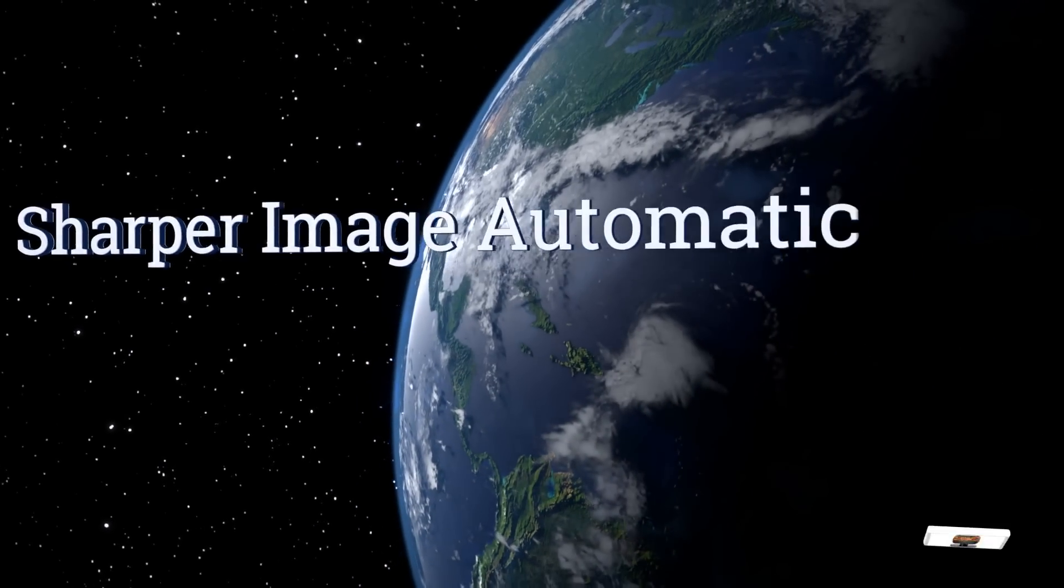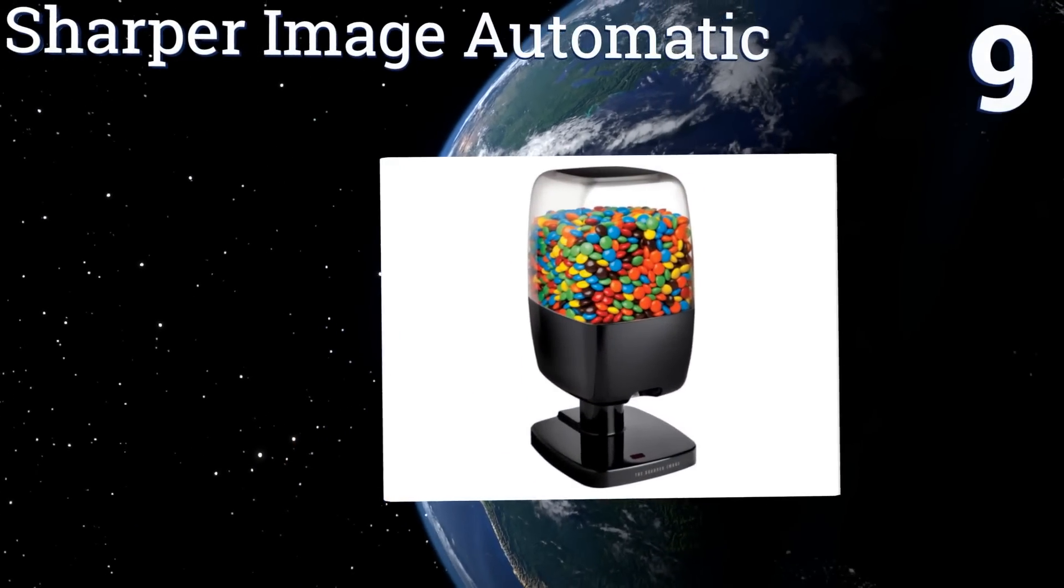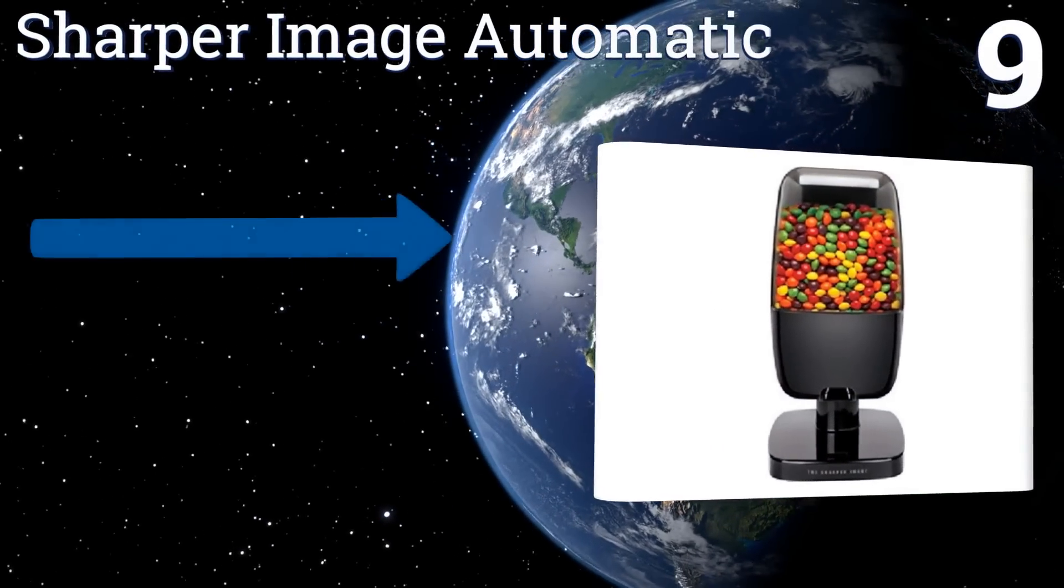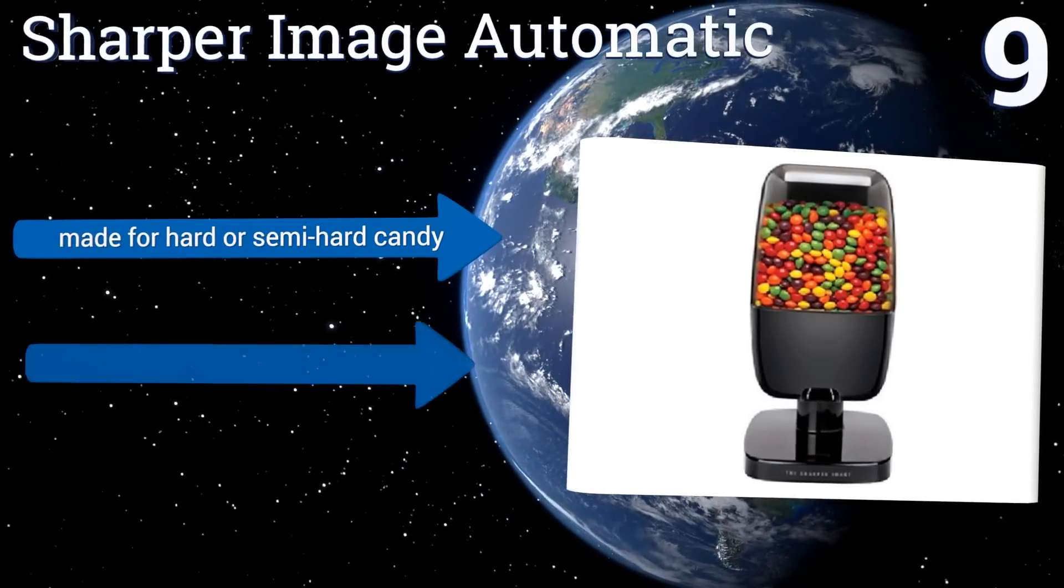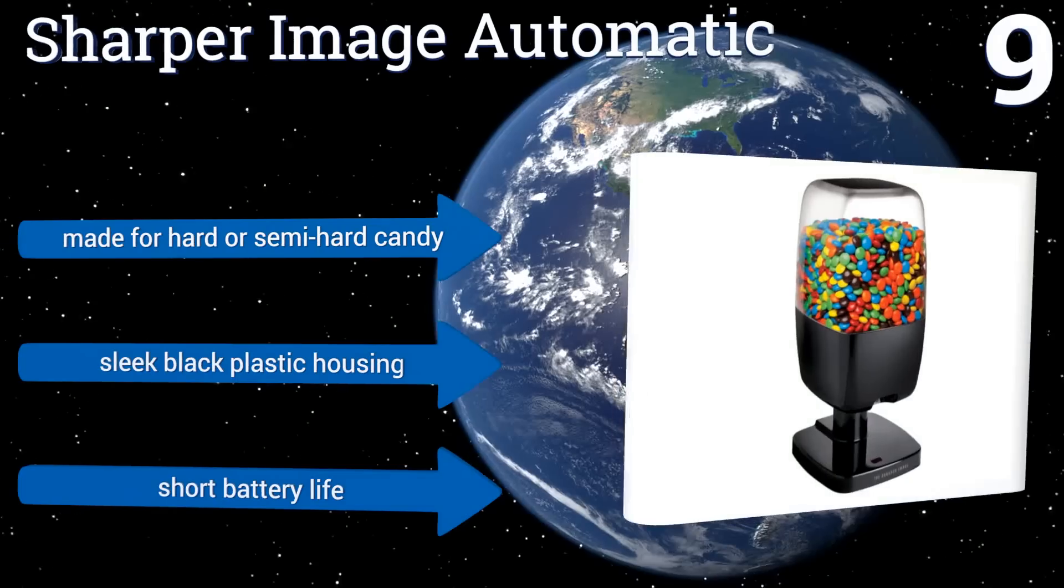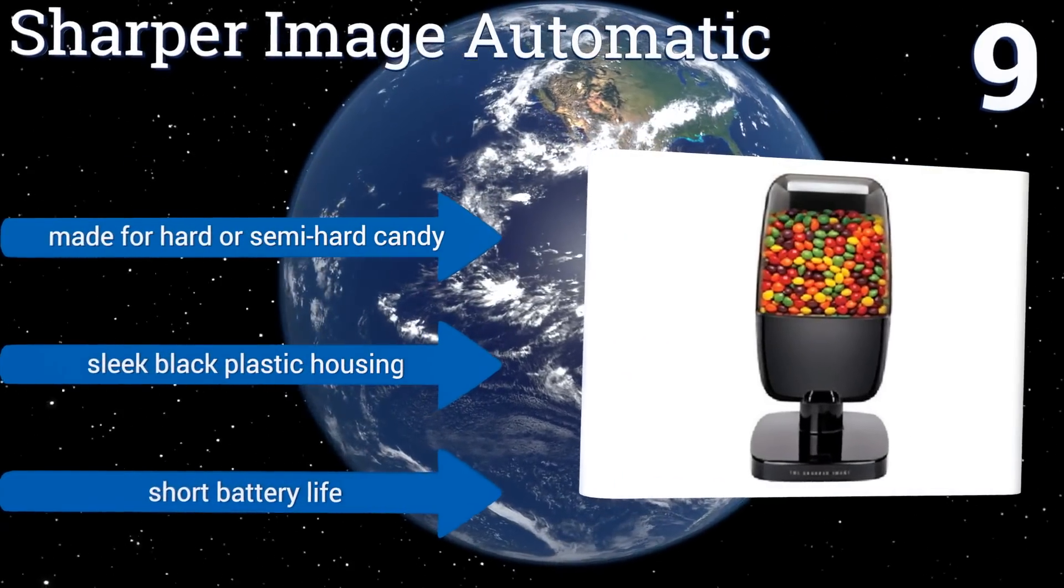At number 9. Ideal for your office or kitchen, the Sharper Image Automatic combines modern technology and convenience with an attractive design. It can hold up to a pound of your preferred snack so you spend less time refilling and operates completely touch-free. It's made for hard or semi-hard candy and has a sleek black plastic housing but it also has a short battery life.